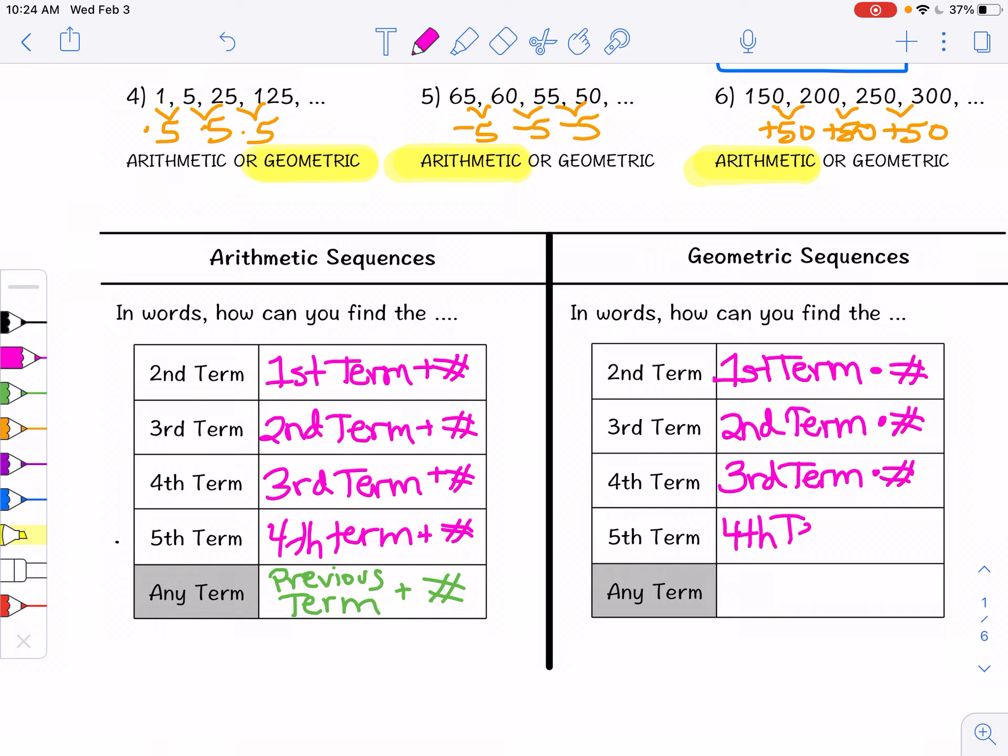And then for the fifth term we need the fourth term times some number. So for any term in general for geometric sequence, we need the previous term times some number.